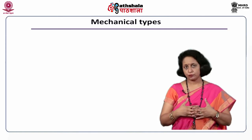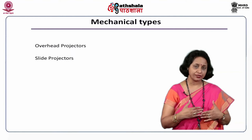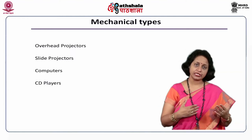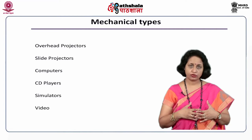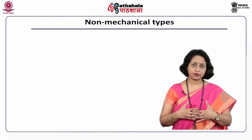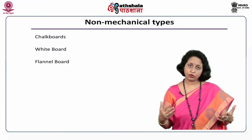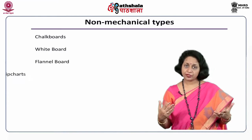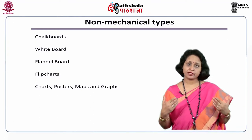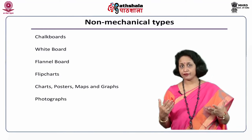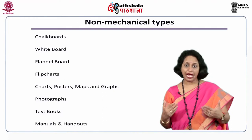Types of Audio-Visual Aids. Mechanical types could be overhead projectors, slide projectors, computers, CD players, simulators, and videos. Non-mechanical types could be chalkboards, whiteboards, flannel boards, flip charts, posters, maps, graphs, photographs, textbooks, manuals, and handouts.